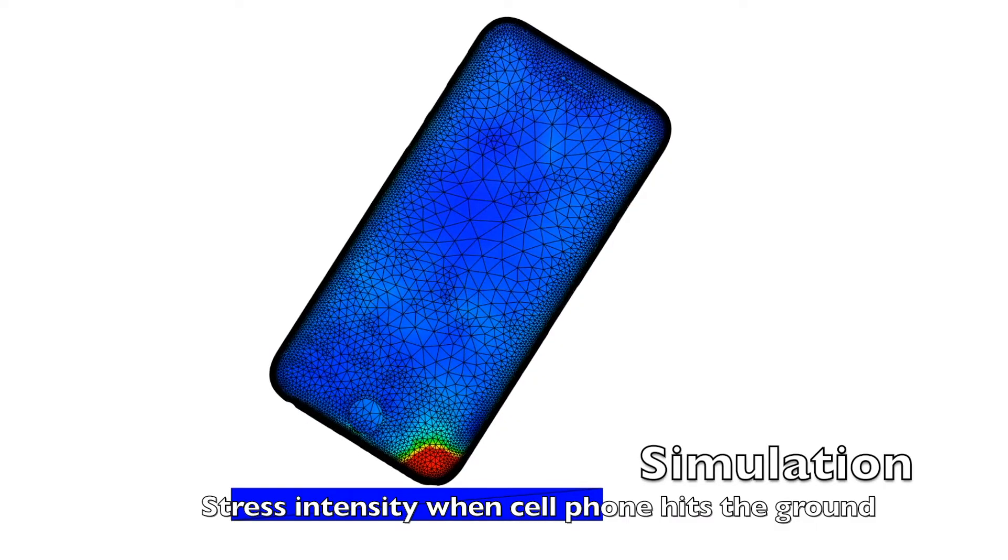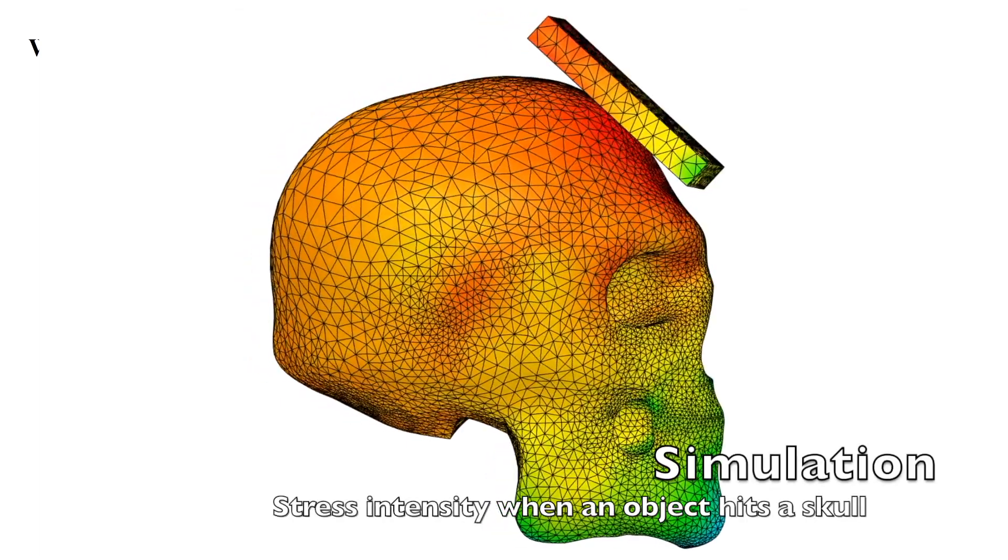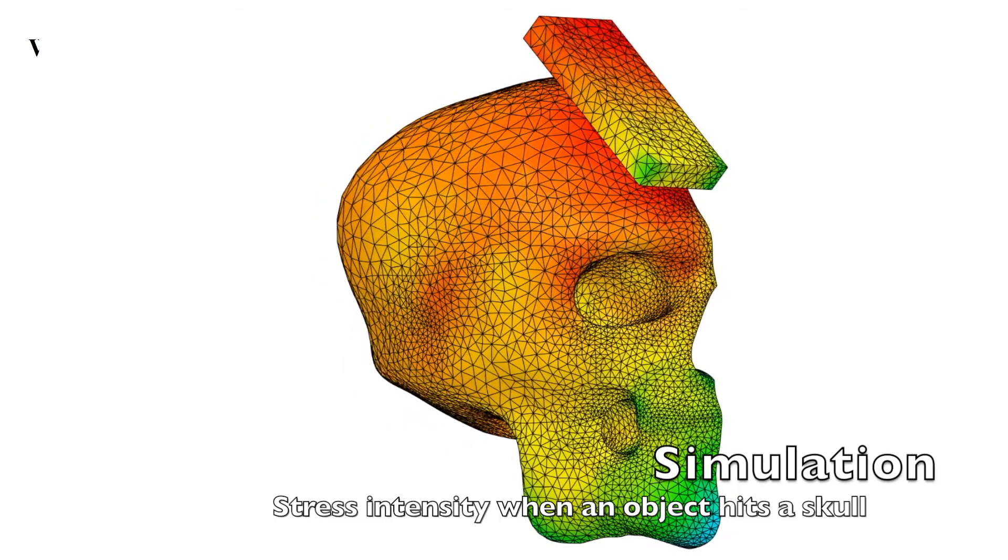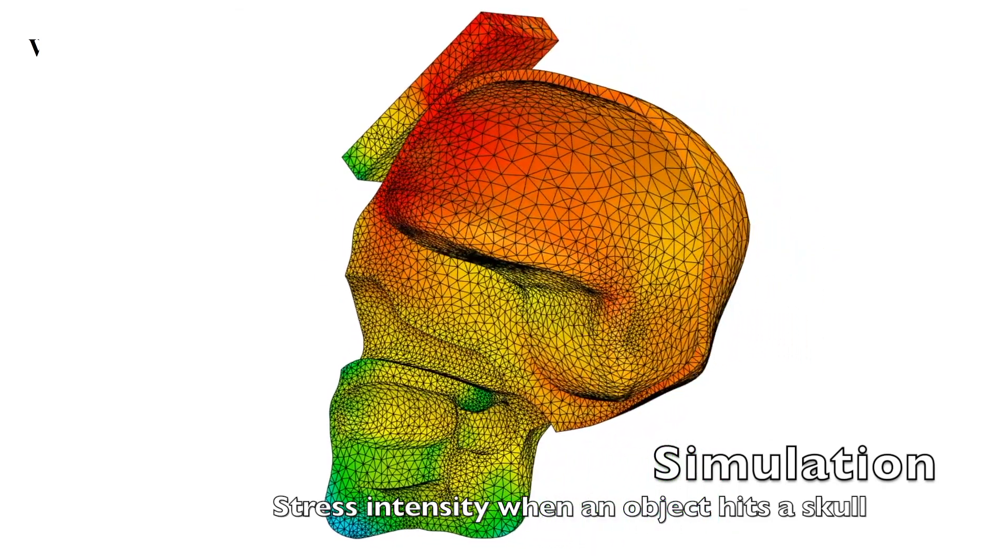In other words, mechanics of materials studies how a deformable body behaves when forces are applied to it, and how much force a material can withstand without breaking. But why does it matter? Why are internal effects of forces in an object important? To answer this question, we need to zoom back and see what engineers do in general.